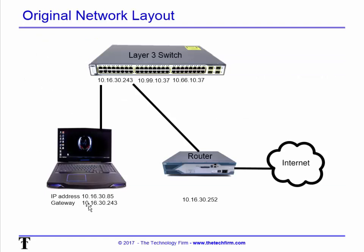A little about the network: my IP is 30.85 and the gateway was 30.243. Even though this is a switch, it's a layer 3 switch set up with routing, so it is my default gateway. I send my ping to 30.243 and then it fires it off through the network.